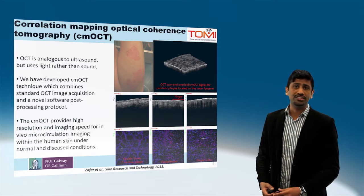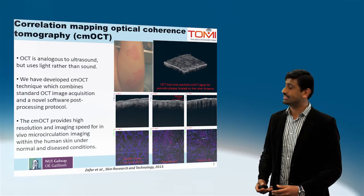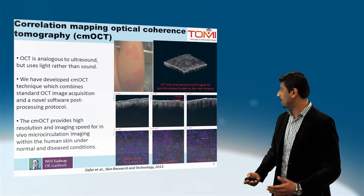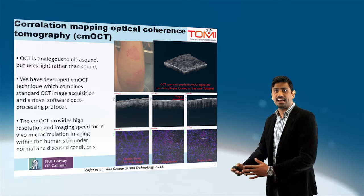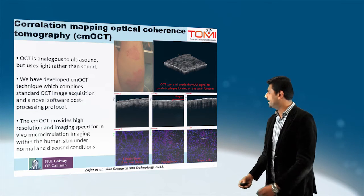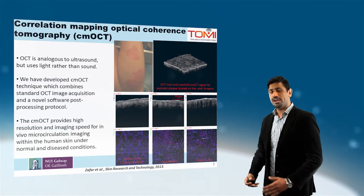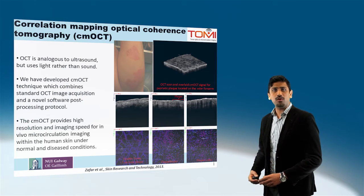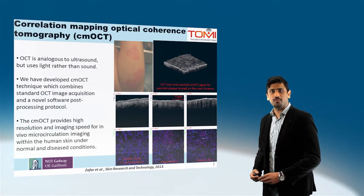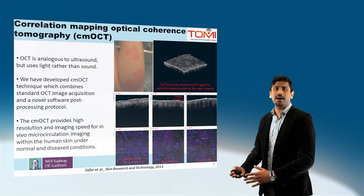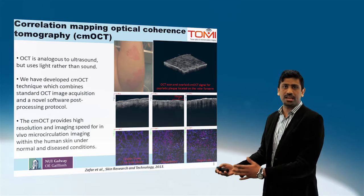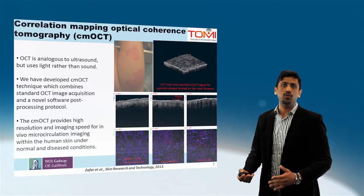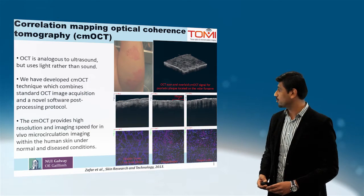Optical coherence tomography is analogous to ultrasound but uses light instead of sound waves. In correlation mapping optical coherence tomography, we have combined normal OCT image acquisition with a post-processing protocol.